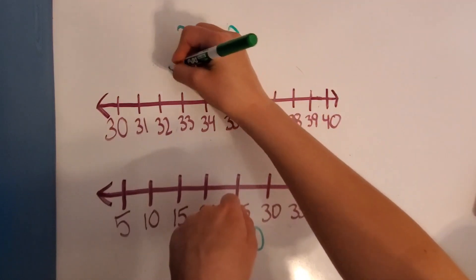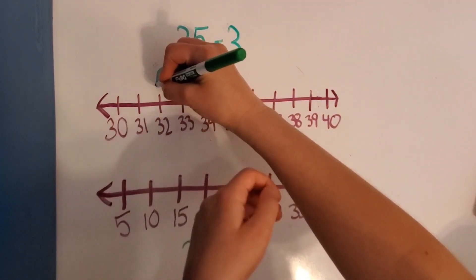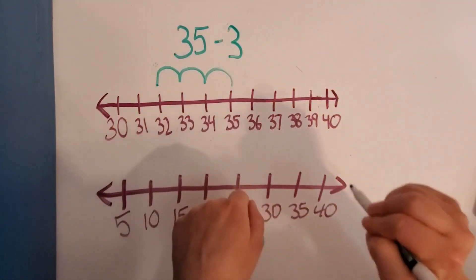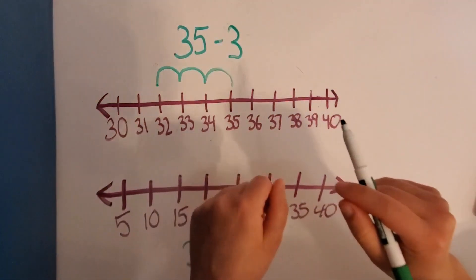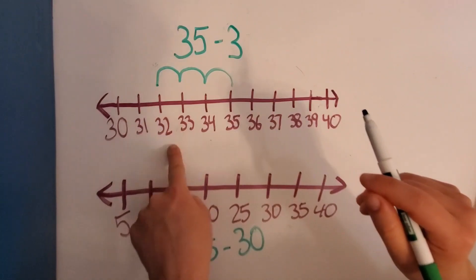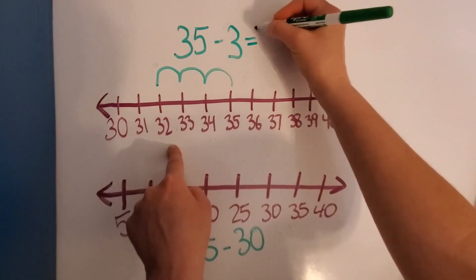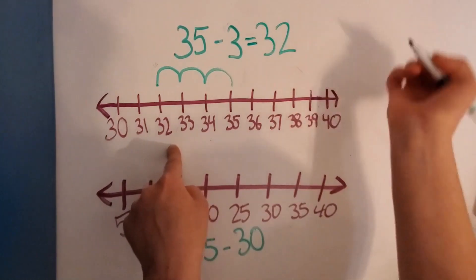1, 2, 3. So we counted back by 1's three times because we're taking away 3. So what number did we end up with? 32. So 35 minus 3 equals 32.